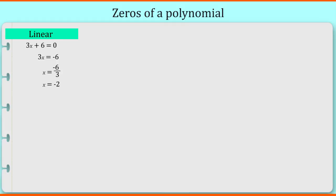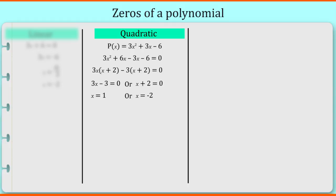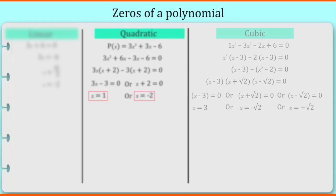After solving this polynomial, we get the value of x as minus 2. When we substitute minus 2 in the place of x, we will get the answer as 0. Similarly, for 3x square plus 3x minus 6, for this quadratic equation, we got 1 and minus 2 as the zeros of polynomial. And for the above given equation, we got 3, minus root 2, and plus root 2 as the zeros of polynomials.